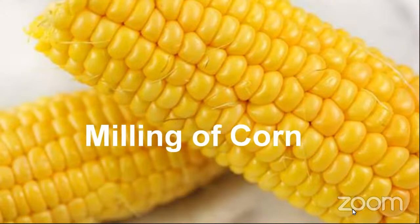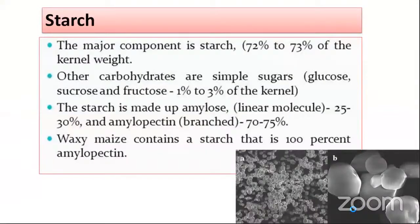Today we are going to start with milling of corn. First, I am going to explain something about the composition of the corn, and thereafter we will talk about the milling of the corn — that is the very important part — which is the wet milling and the dry milling. About the composition of the corn, the first component is starch, because starch is the main component.